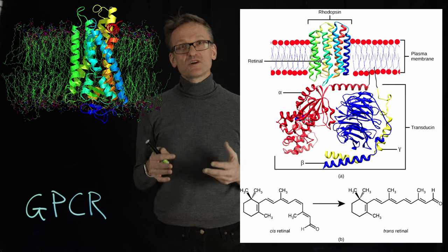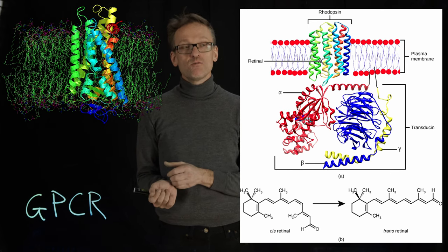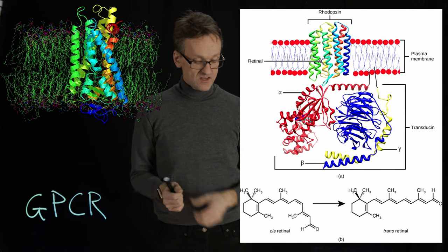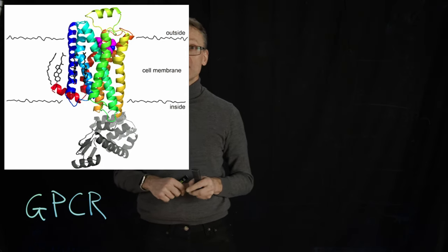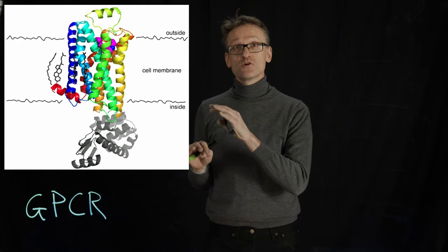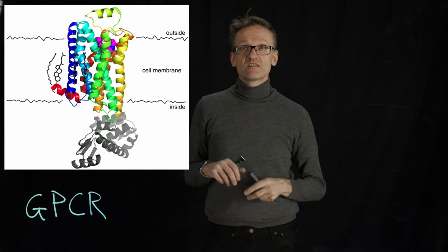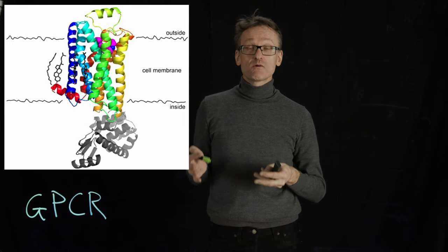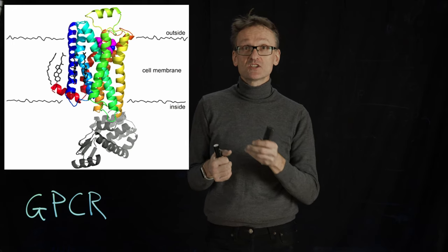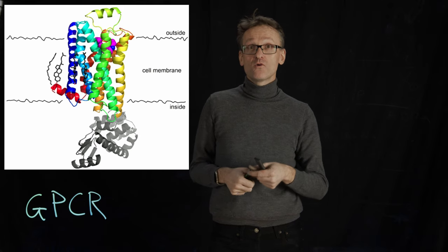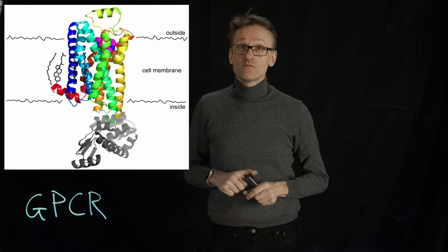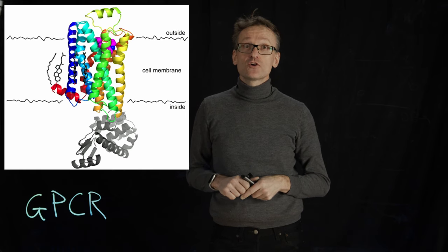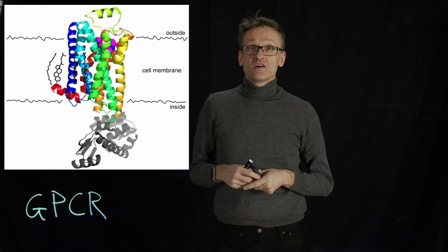But science works that way sometimes. It goes slow and then from one day to another things happen suddenly. Ray Stevens and Brian Kobilka were able to determine structures of G-protein coupled receptors, and from one day to another, when we had one structure, we could repeat that recipe and get structure one more and one more. This has exploded since.